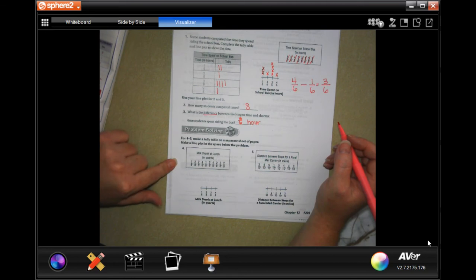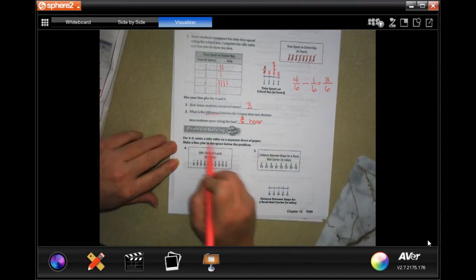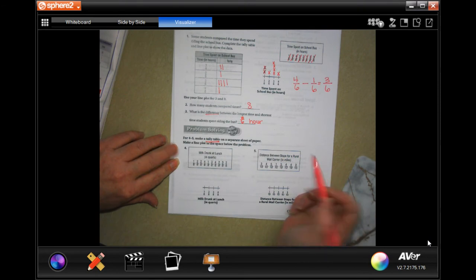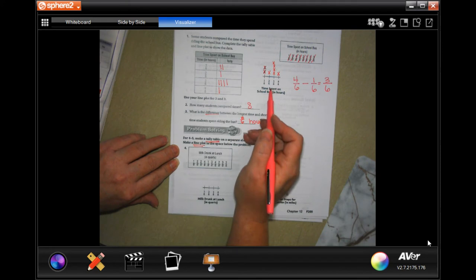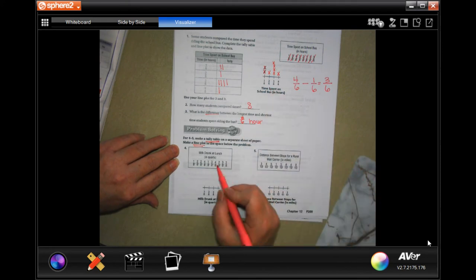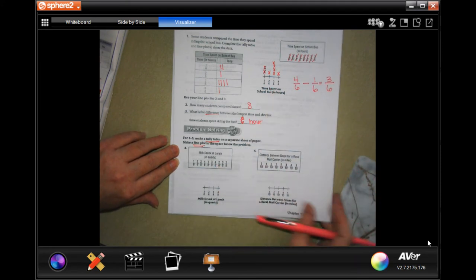You guys are going to do the exact same thing for four and five. You're going to make a tally table and make a line plot. This is a tally table, this is a line plot. You're going to do that for four and you're going to do that for five. That's all you have to do for them.